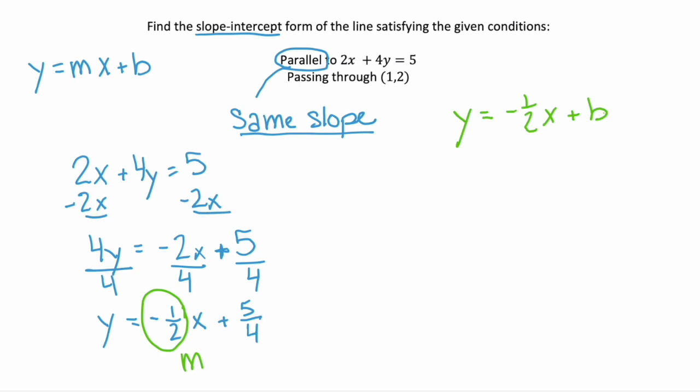Well, we don't know what b is. So we need to solve for b. And that's where that given point comes in. Remember that a point is x and y. So we can substitute these values, 1 and 2, in for our x and y, and then solve for b.